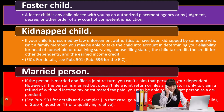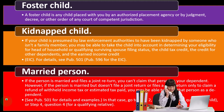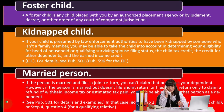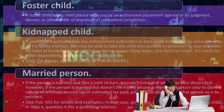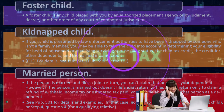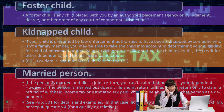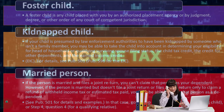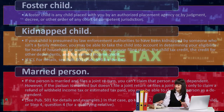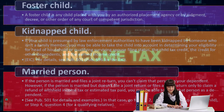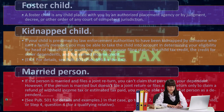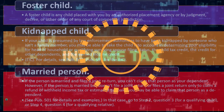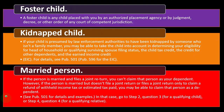However, if the person is married but doesn't file a joint return, or files a joint return only to claim a refund of withheld income tax or estimated tax paid, you may be able to claim that person as a dependent. See Publication 501 for details and examples. In this case, go to step two question two for qualifying child, and step four question four for qualifying relative.